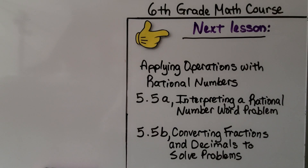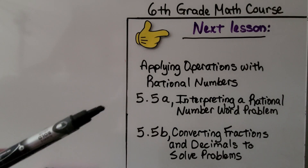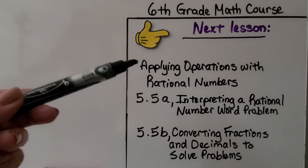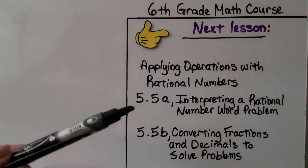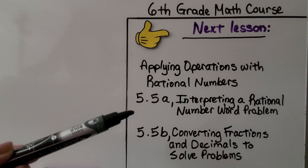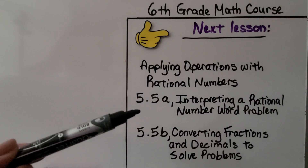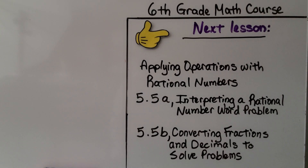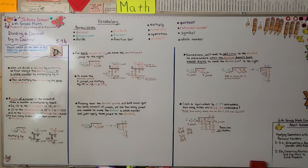We're going to move on to lesson 5.5 now about applying operations with rational numbers — it's split into two parts. 5.5a is going to be interpreting a rational number word problem. Keep trying your best. Have a great day and I'll see you next time.